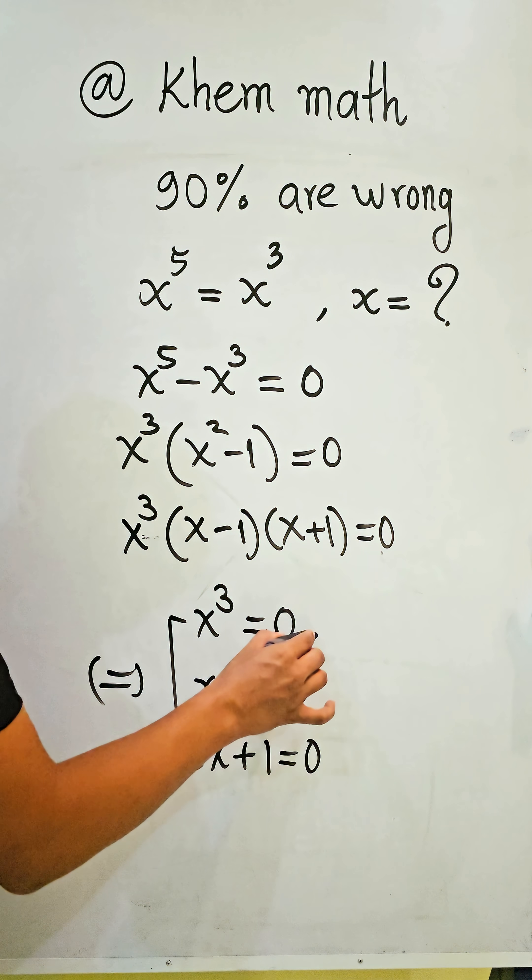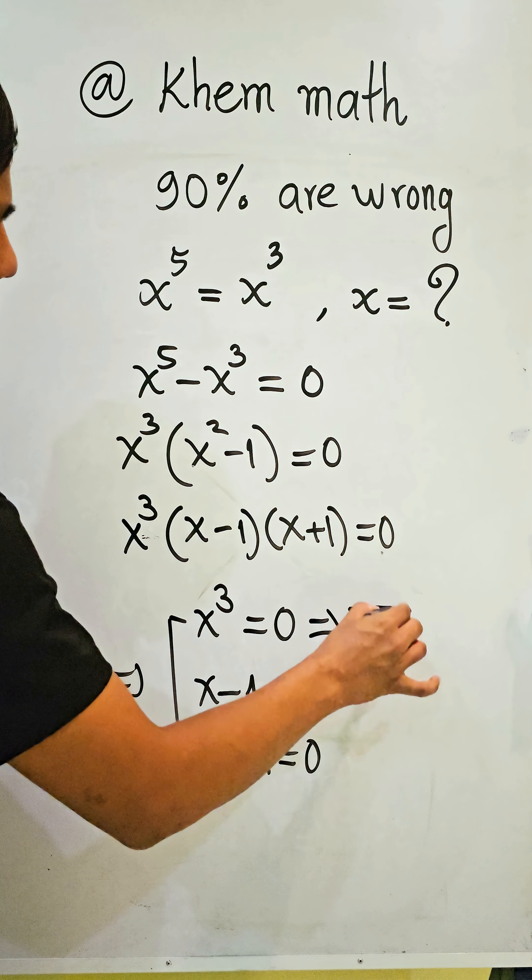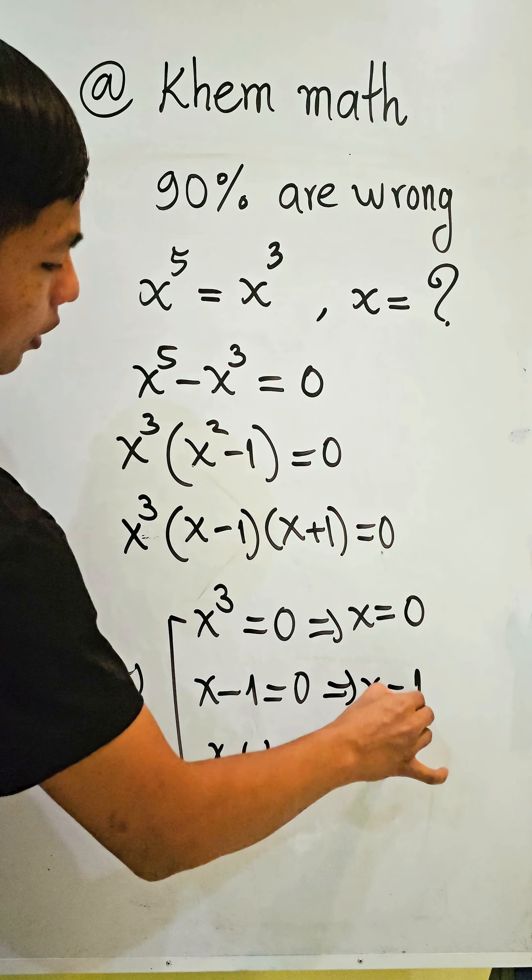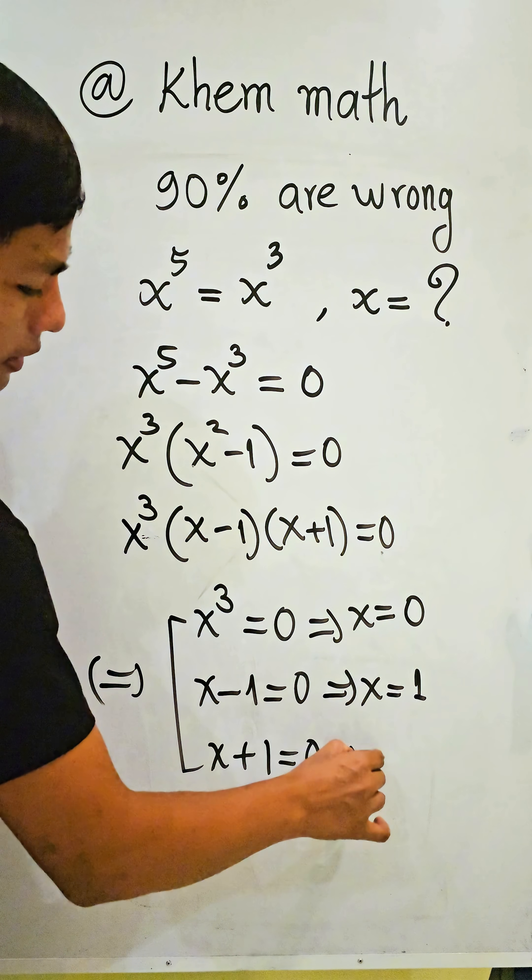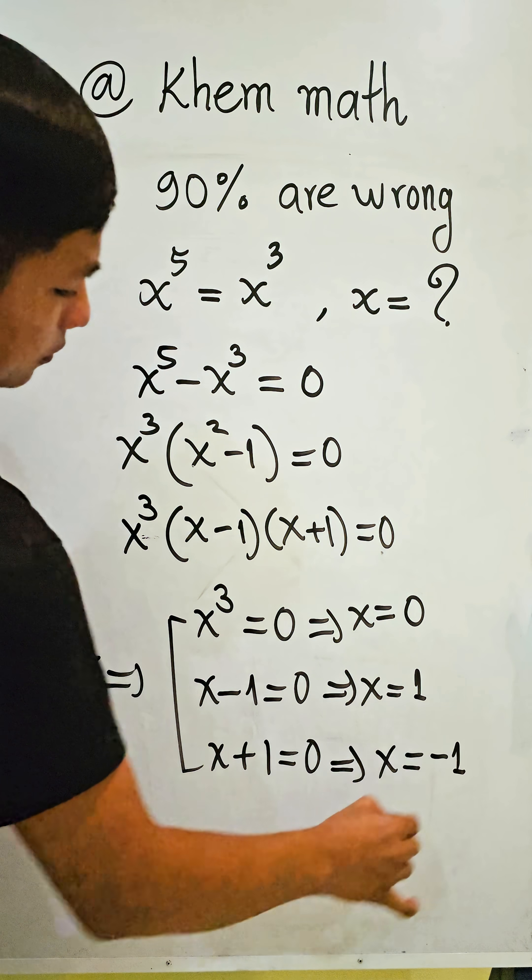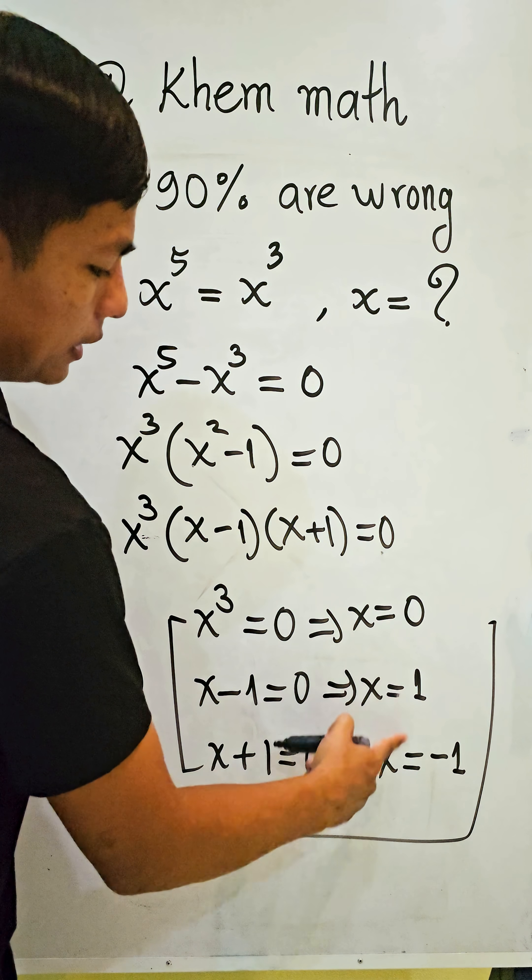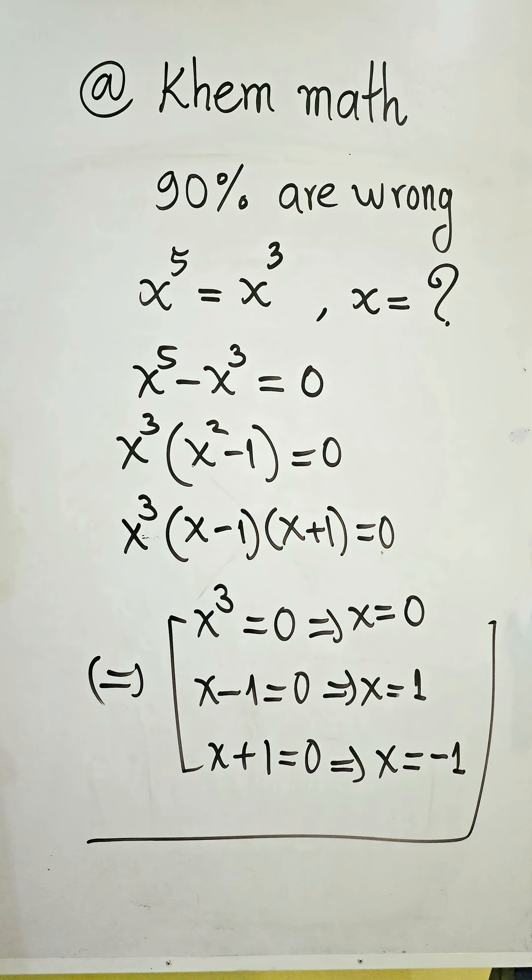So we get x equals zero, and here we get x equals 1, and here we get x equals negative 1. So x equals 0, x equals 1, and x equals negative 1 is our answer.